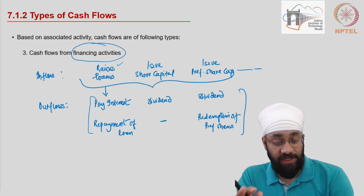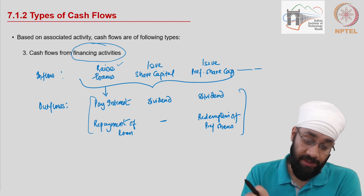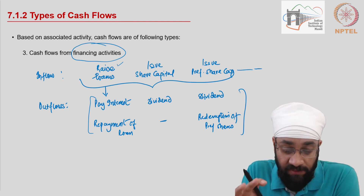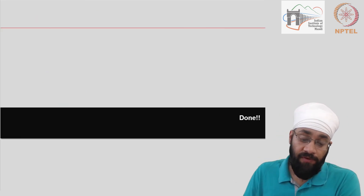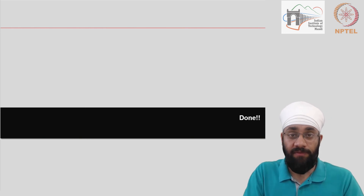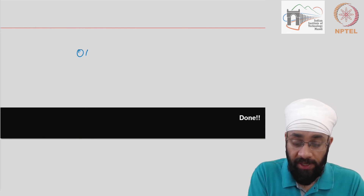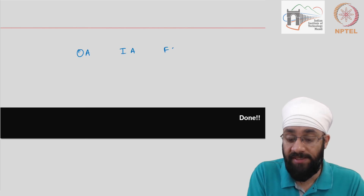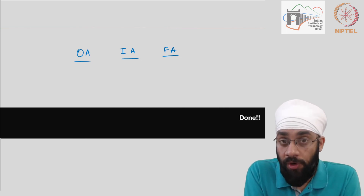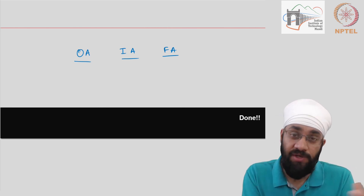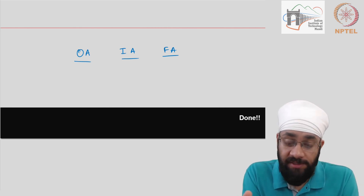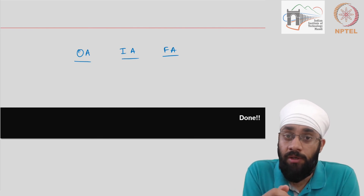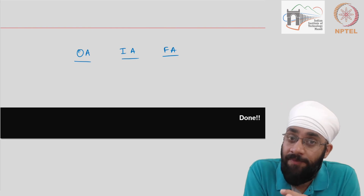So you now have a fair idea about the operating activities, investing activities, and financing activities of the business. We are also going to do a tutorial where we look at a list of transactions, categorize them, and then go on to looking at more details of the cash flow statement. See you in the next video.